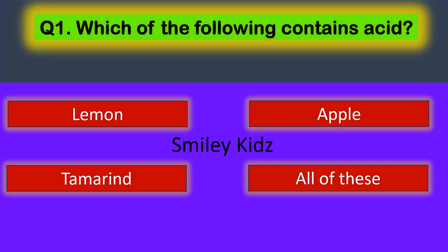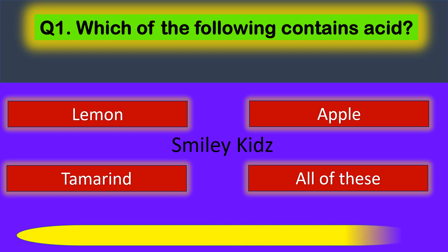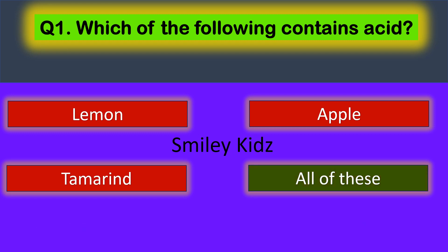Question number one: which of the following contains acid? Your options are: lemon, apple, tamarind, and all of these. Your time starts now. The correct answer is all of these — lemon, apple, and tamarind all contain acid.